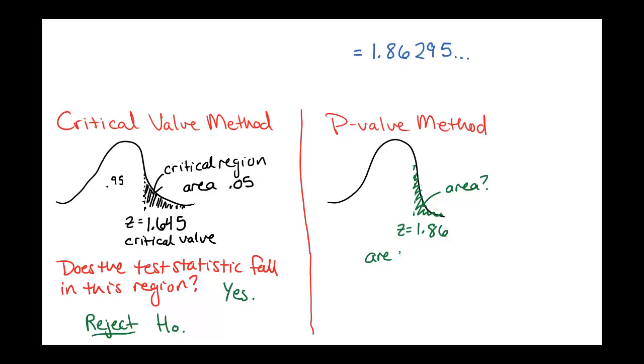And the area to the right is 1 minus 0.9686. So this comes out to 0.0314. So this is the area to the right of the test statistic that we computed from before. That's where that 1.86 came from. And then we look at this number and say, is this less than alpha? In this case, this is less than alpha, which was 0.05 in this case.